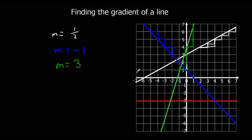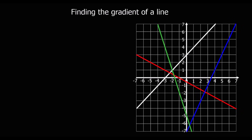And the red line, finally — for every 1 we go across, we don't go up. So it's actually got a gradient of 0. It's got no gradient. Okay, here's some more lines. See if you can work out the gradient of them. Pause the video and then I'll put the answer up after.